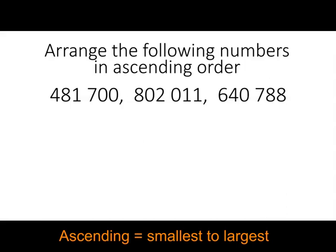When we compare these numbers, we need to firstly look at the largest place value. So in this first number we have 400,000. In the second number we have 800,000. And in the third number we have 600,000. Now, which of these numbers is the smallest: 4, 8, or 6? Because 4 is the smallest number, we can see straight away that this is our smallest number.